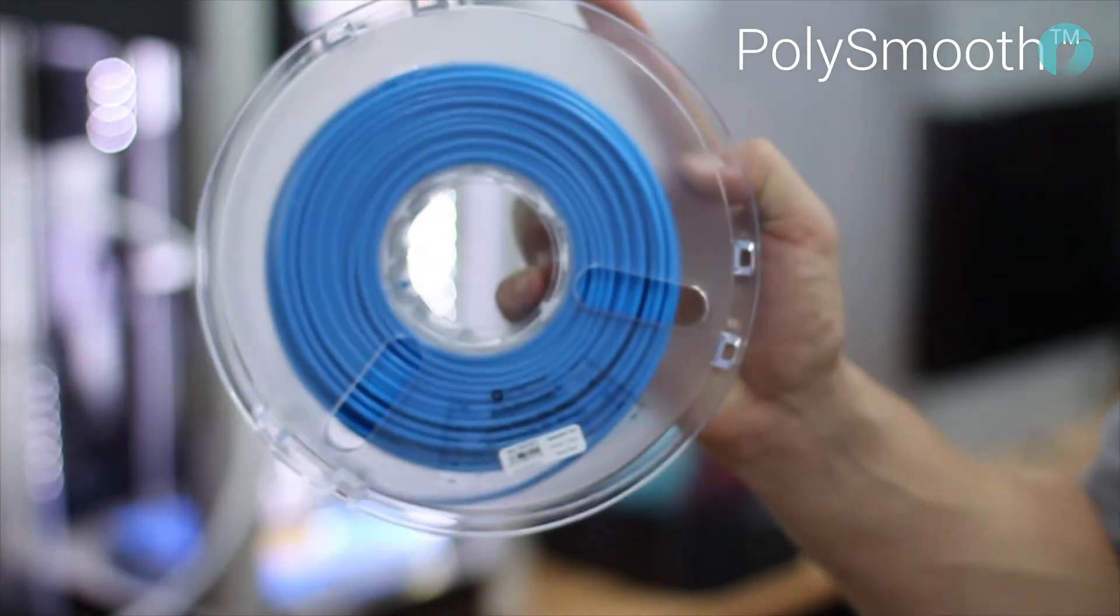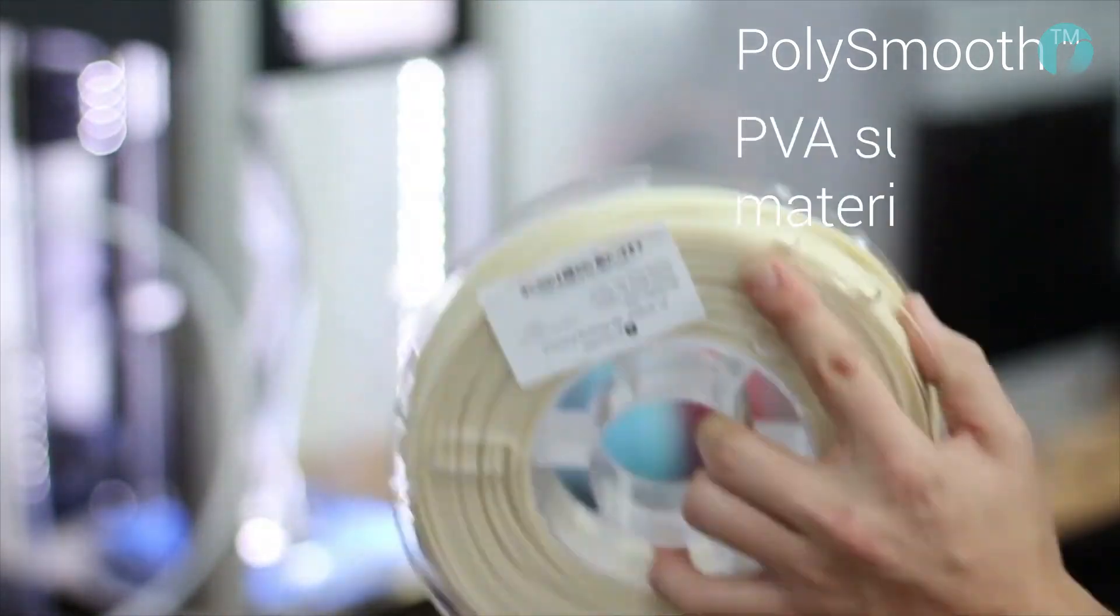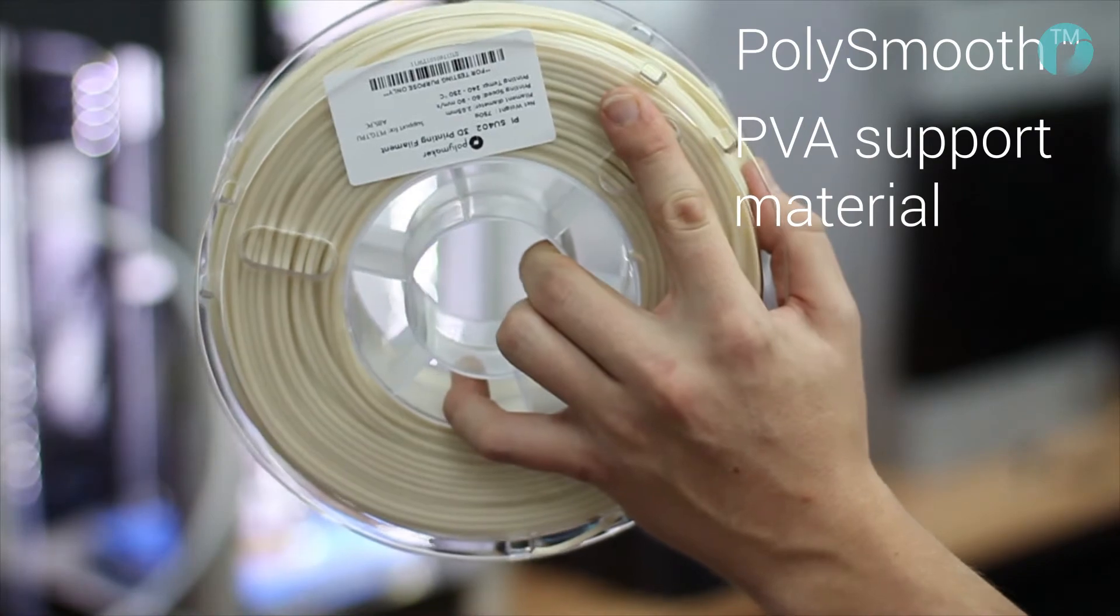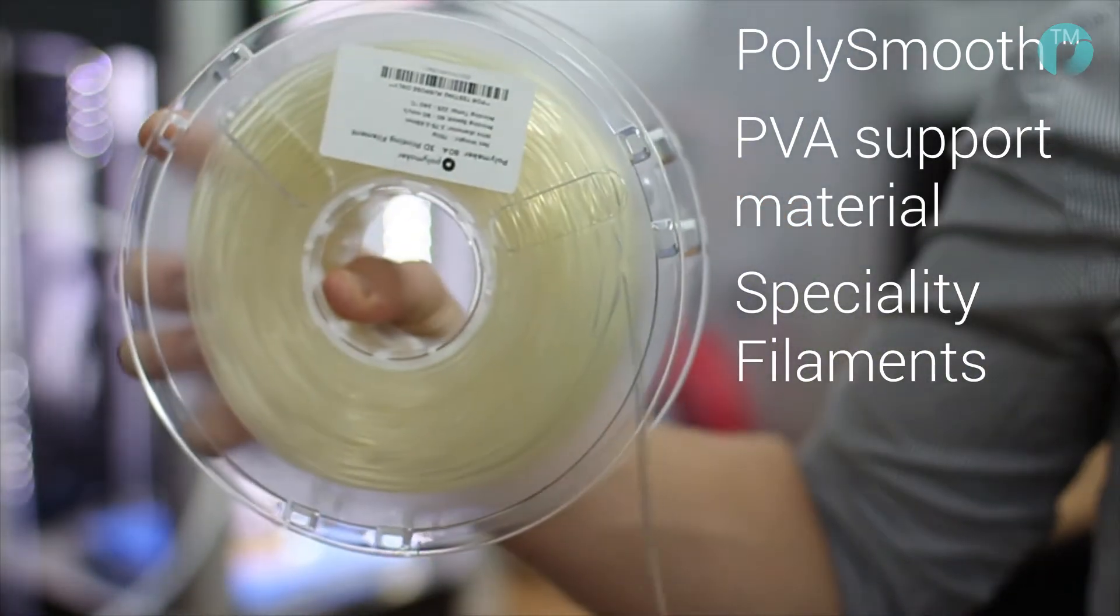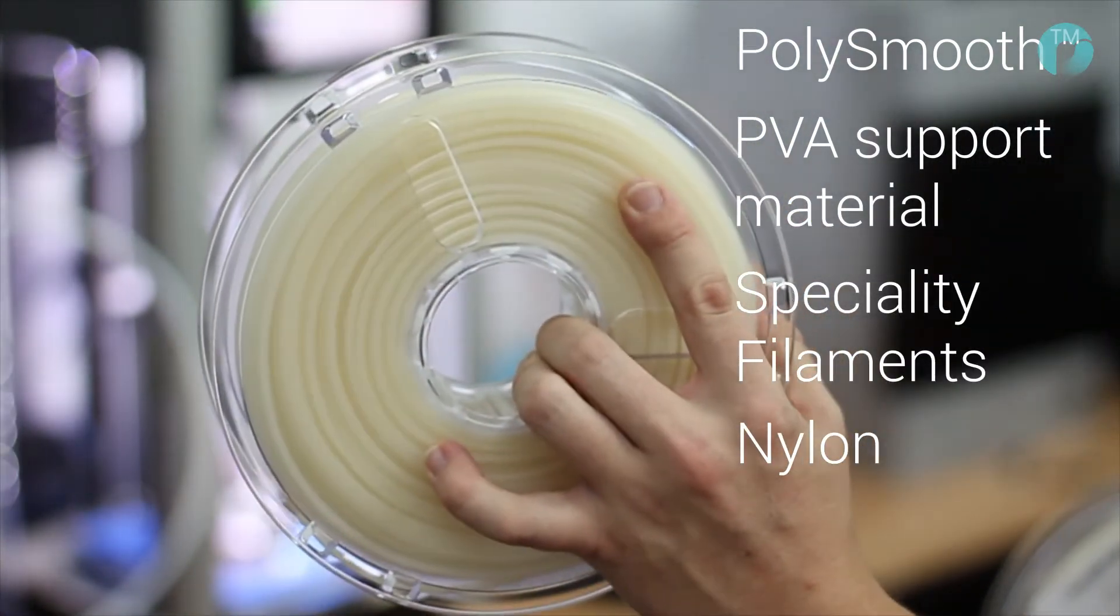The polybox has been designed specifically for hygroscopic materials, such as polysmooth, PVA support materials, specialty filaments, and nylon, but all other filaments can benefit too.